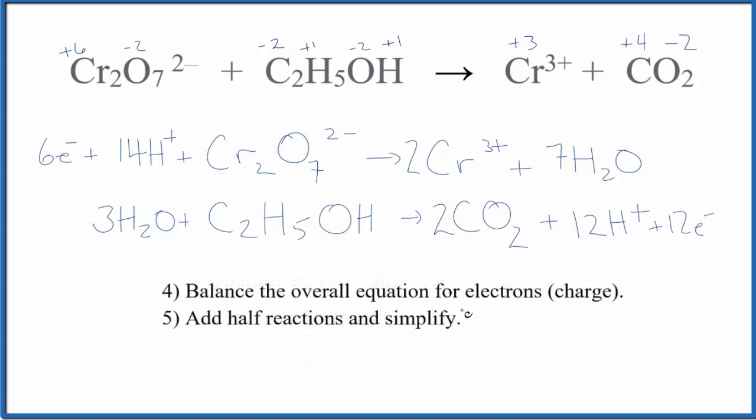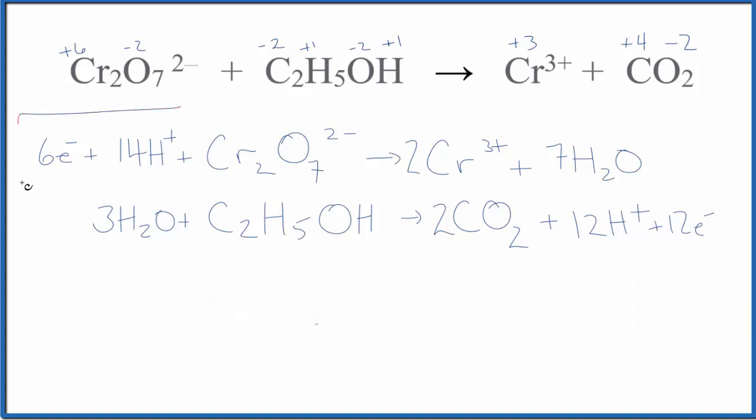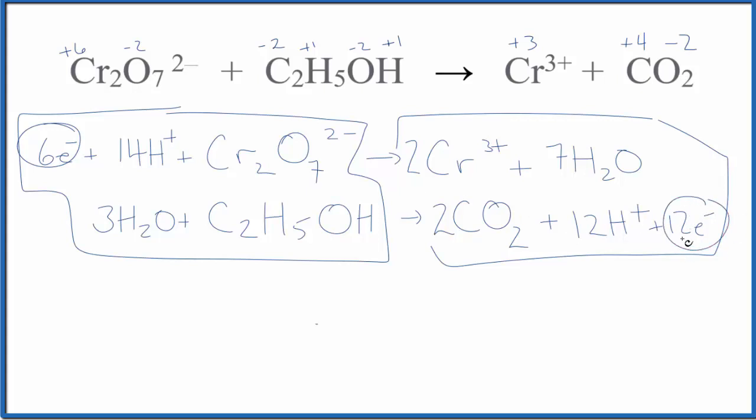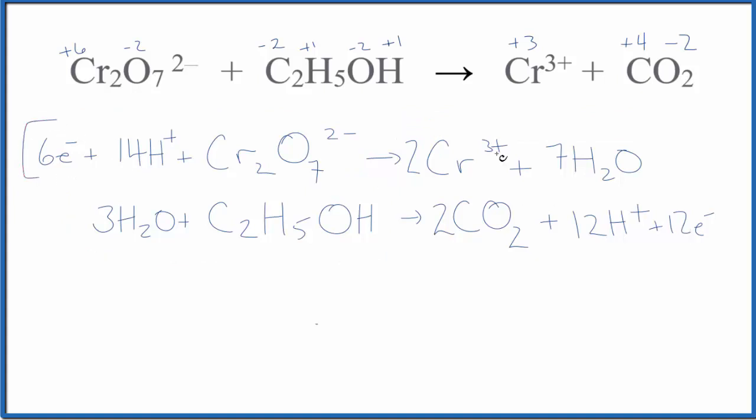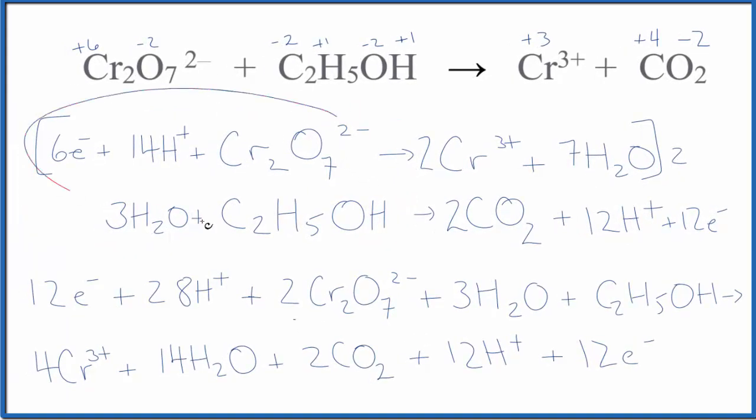Once we've done this, we can balance the overall equation for the number of electrons, for the charge, and then we can simplify the half reactions. These are the reactants and these over here are the products. But we have six electrons in the reactants and 12 in the products, so that's not balanced. What we could do is multiply this whole thing up here by 2. Everything, that would give us 12 electrons here and we have 12 here. So we'll multiply all of this by 2, and then we'll put our reactants down here and our products underneath that.